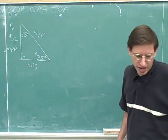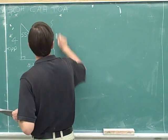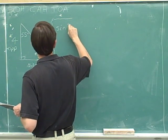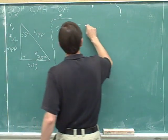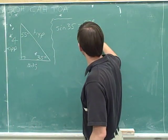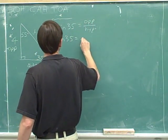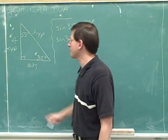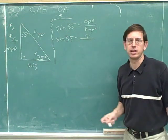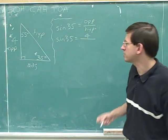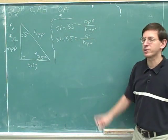We can start with either sine or tangent. I'll start with sine, but you can start with tangent if you prefer. Sine of 35 — the asterisk reminds me I'm focusing on the 35-degree angle. Sine is opposite over hypotenuse. The opposite side is 4, which we know. We don't know the hypotenuse, so I'll plug in a variable H for hypotenuse.